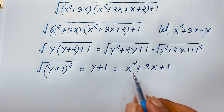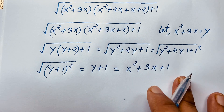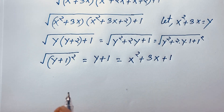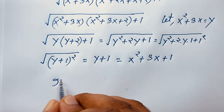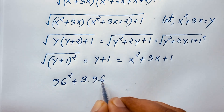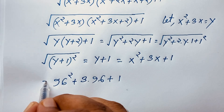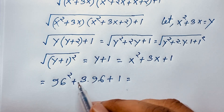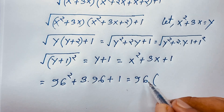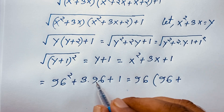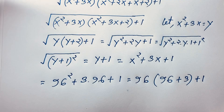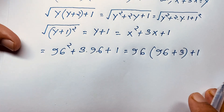Now remembering that x equals 96, I substitute: 96 squared plus 3 times 96 plus 1. Factoring out 96, this becomes 96 times (96+3) plus 1, which is 96 times 99 plus 1. I have solved this square root math problem without a calculator.